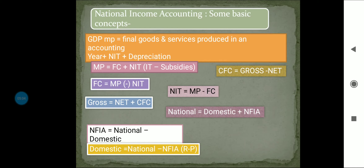GDP MP means gross domestic product at market price. When we say market price, it includes all indirect taxes. When we say factor cost, it excludes indirect taxes and includes subsidies. GDP MP equals the final goods and services produced in an accounting year plus NIT (net indirect taxes) plus depreciation. So market price equals factor cost plus NIT, where NIT is the difference between indirect taxes and subsidies. Subsidies are help provided by the government, while indirect taxes are levied by the government on consumers.